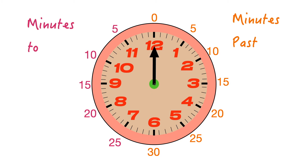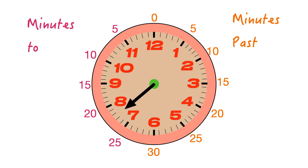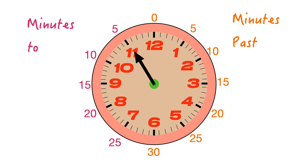Now we can look at our minutes-to side of the clock. This time we're thinking about how far the minute hand has to go until it gets to the next hour, which is back at the 12. We can count in lots of five: one, two, three, four, five minutes to go until we get to the 12. So the 11 really represents five minutes to the next hour.